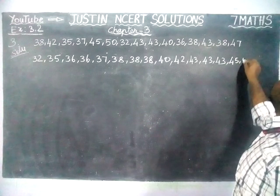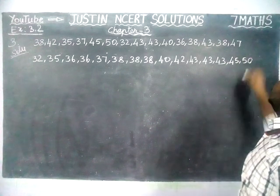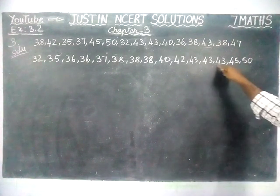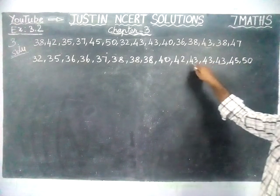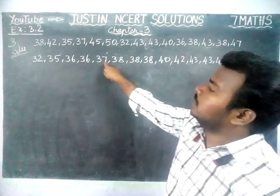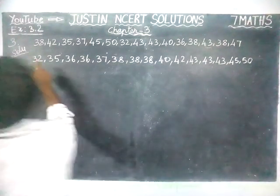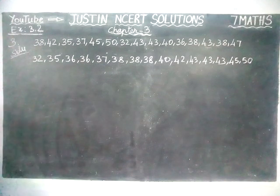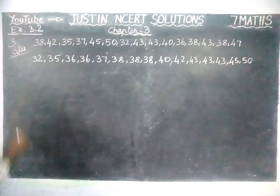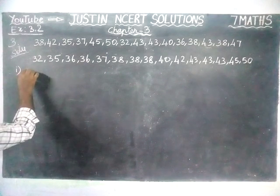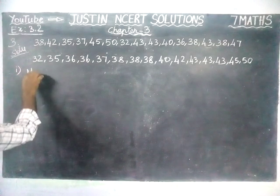45 and 50. Now, we will count all the values: 1, 2, 3, 4, 5, 6, 7, 8, 9, 10, 11, 12, 13, 14, 15. We have 15 students written. Now, we are going to find the first part — mode of the given data.